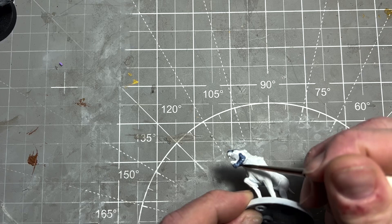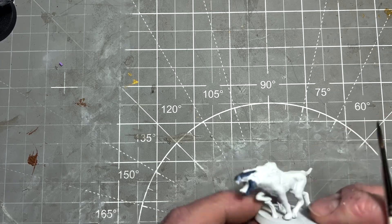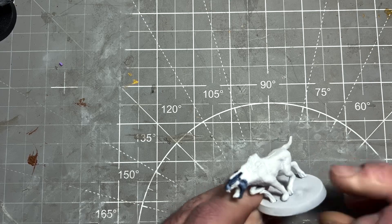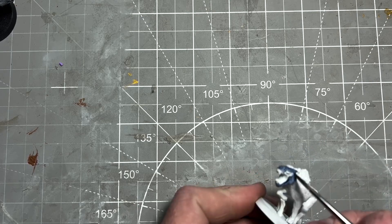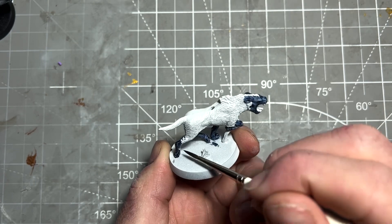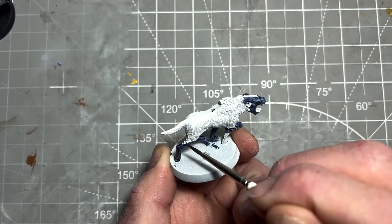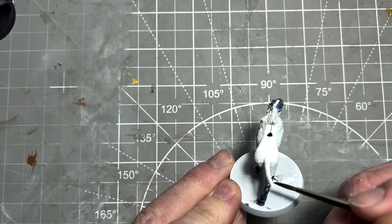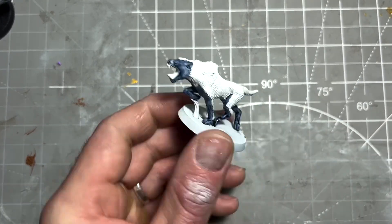Now we're going to paint my Angmar-inspired Warg. First, prime the model white, then use Cloudburst Blue Army Painter Speed Paint at a 2-to-1 ratio—two parts Cloudburst Blue, one part Speed Paint Medium—and cover the whole skin area.